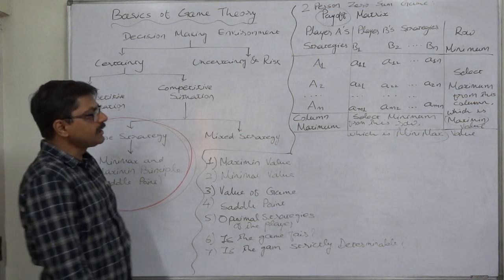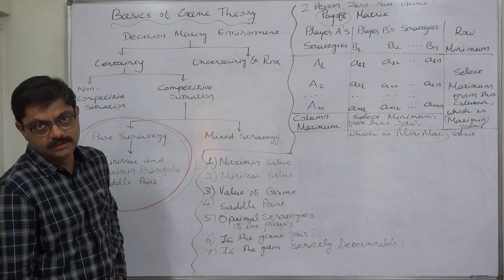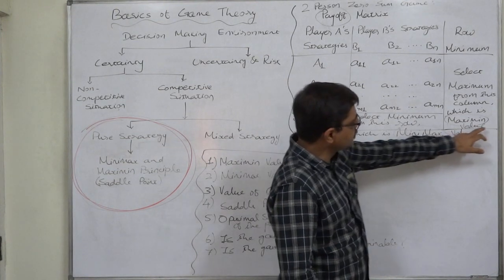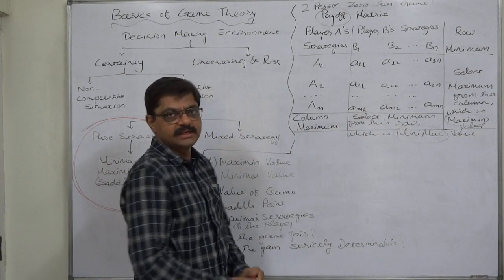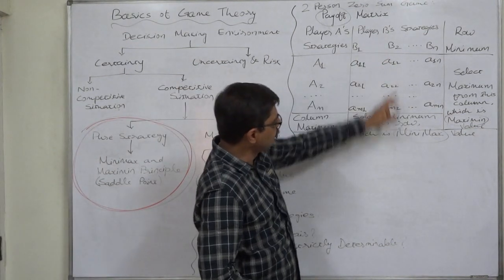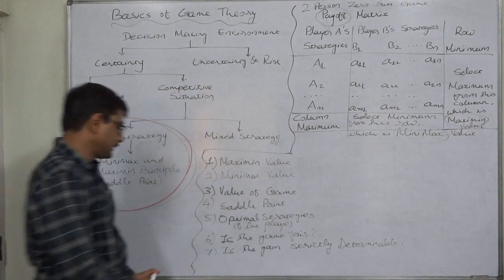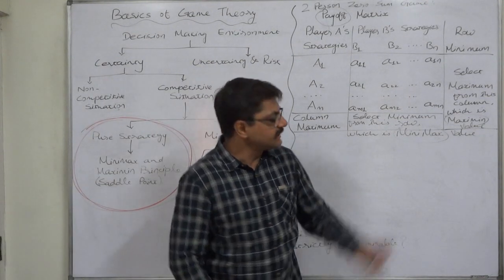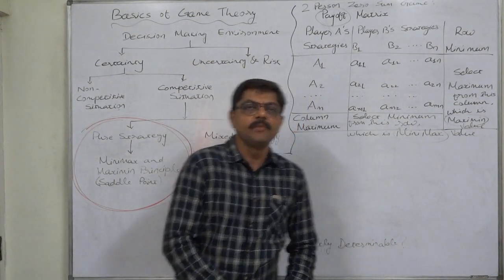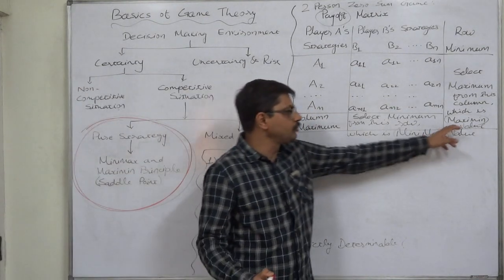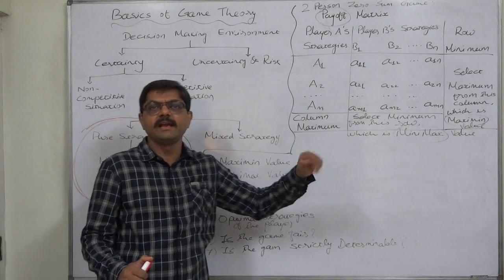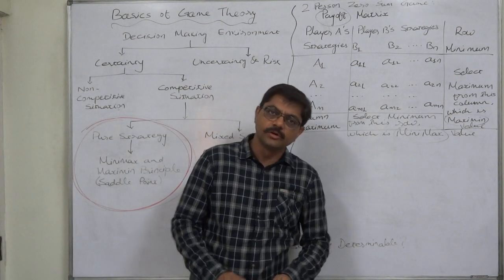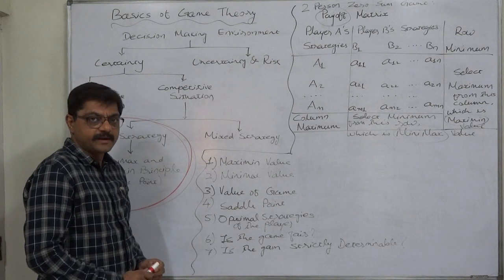The next question is: what are the optimal strategies of the two players? The strategy for player A which gives the maximin value is the optimal strategy for A. Similarly, the strategy for B which gives the minimax value is the optimal strategy for B. Another question is: is the game fair? A game can be called a fair game only if the maximin value equals the minimax value equals zero — that means all three values, minimax, maximin, and value of game, are zero.